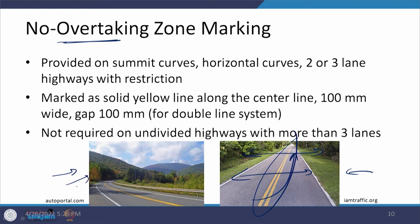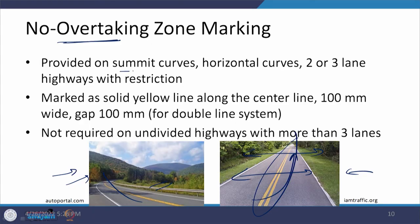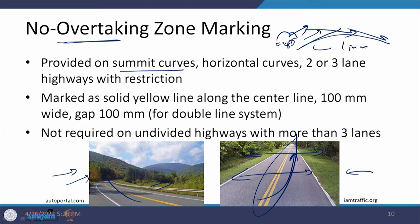Another case shows a curve on dangerous terrain — though crash barriers are on the valley side — where drivers are instructed not to overtake and to wait until after negotiating the curve. No overtaking zone markings should be provided on summit curves, horizontal curves, and 2 or 3 lane highways with certain restrictions. A summit curve means the road goes up and then comes down, limiting visibility of the other side based on gradient 1 in n. These are marked using solid yellow lines.